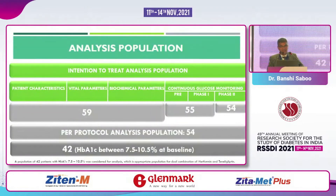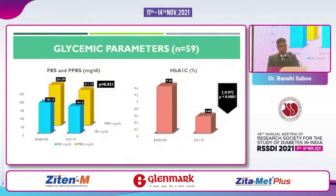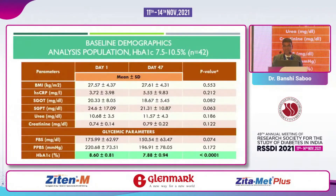The results are very interesting. 59 patients participated; two CGM assessments were completed in 54–55 patients. The per-protocol population was 54 and 42 patients. Among those with baseline HbA1c between 7.5–10.5%, glycemic parameters showed fasting plasma glucose significantly reduced from 211 to 161 mg/dL, PPBS from 241 to 183 mg/dL, and A1c reduced from 9.35% to 8.48% with a significant p-value — demonstrating efficacy of the glyptin.